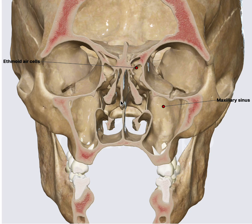That's the septum you can see. Now when the inferior turbinate increases in size it will occupy a lot of space, and actually even if the septum is in the midline the patient will have nose block.